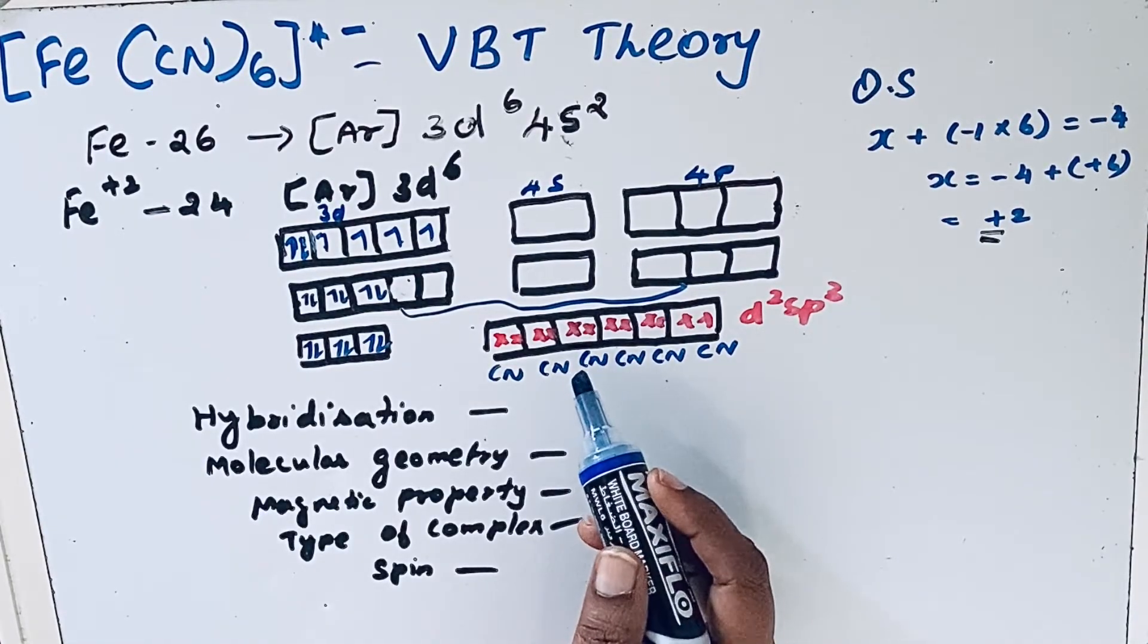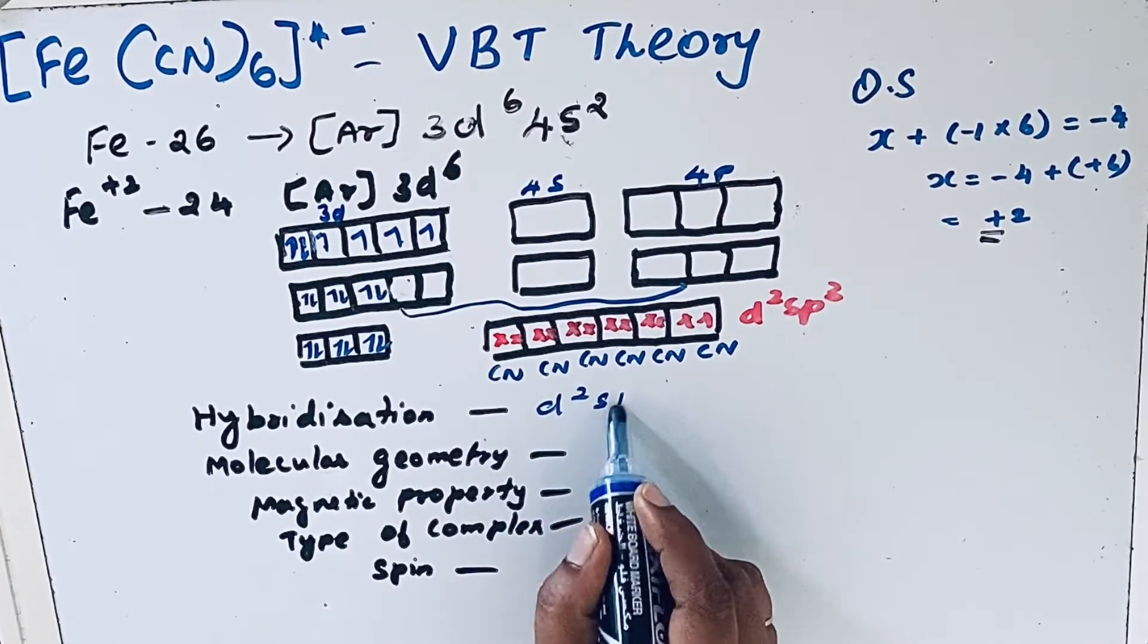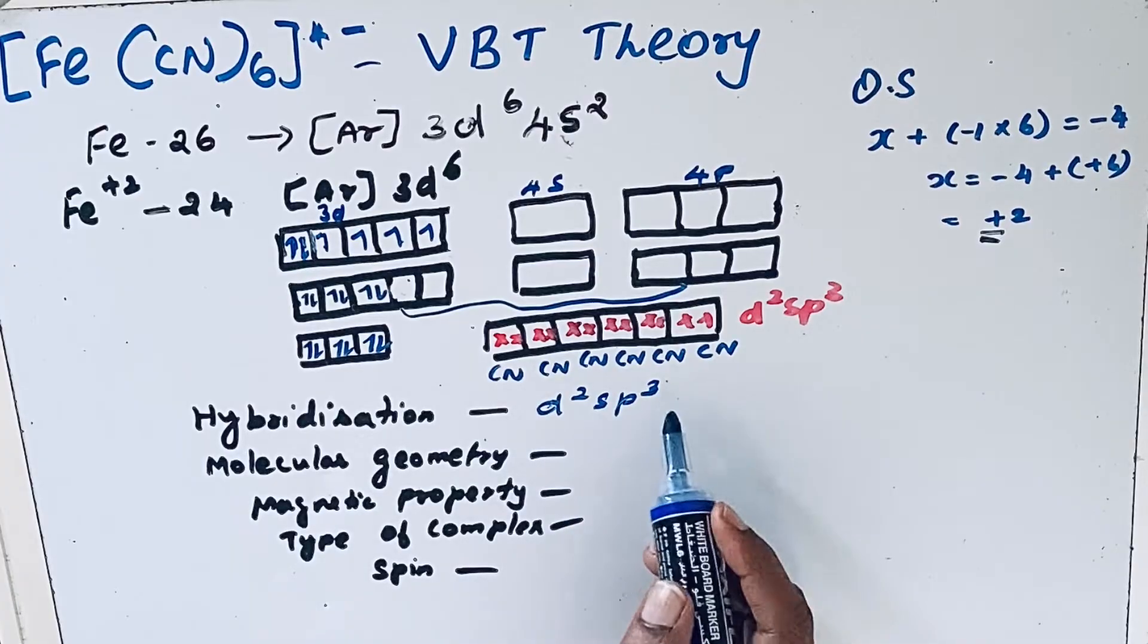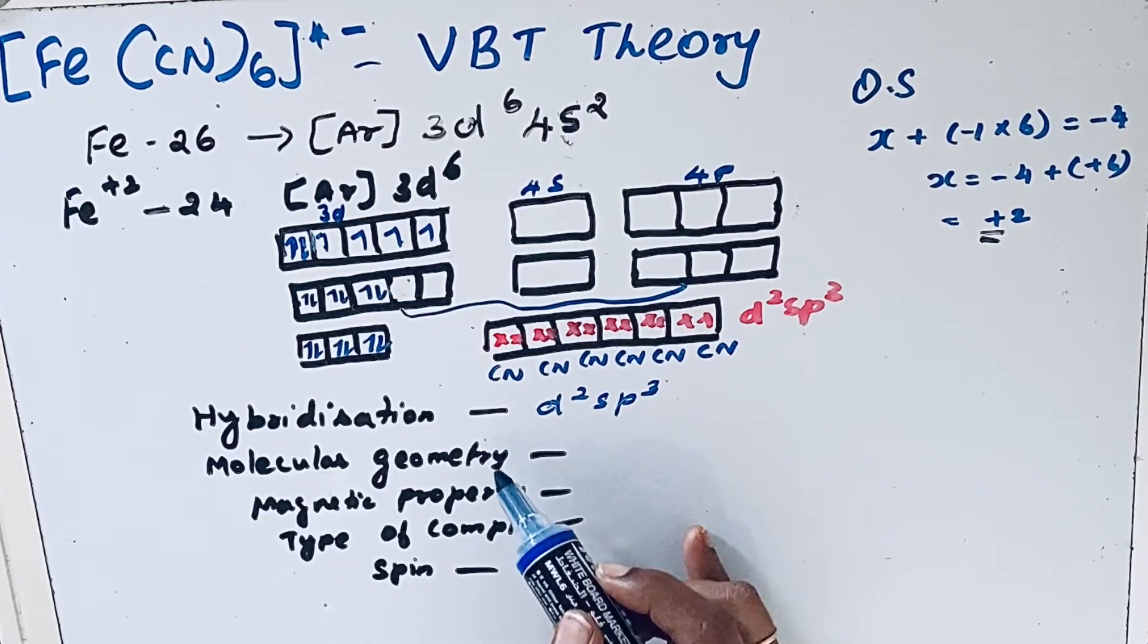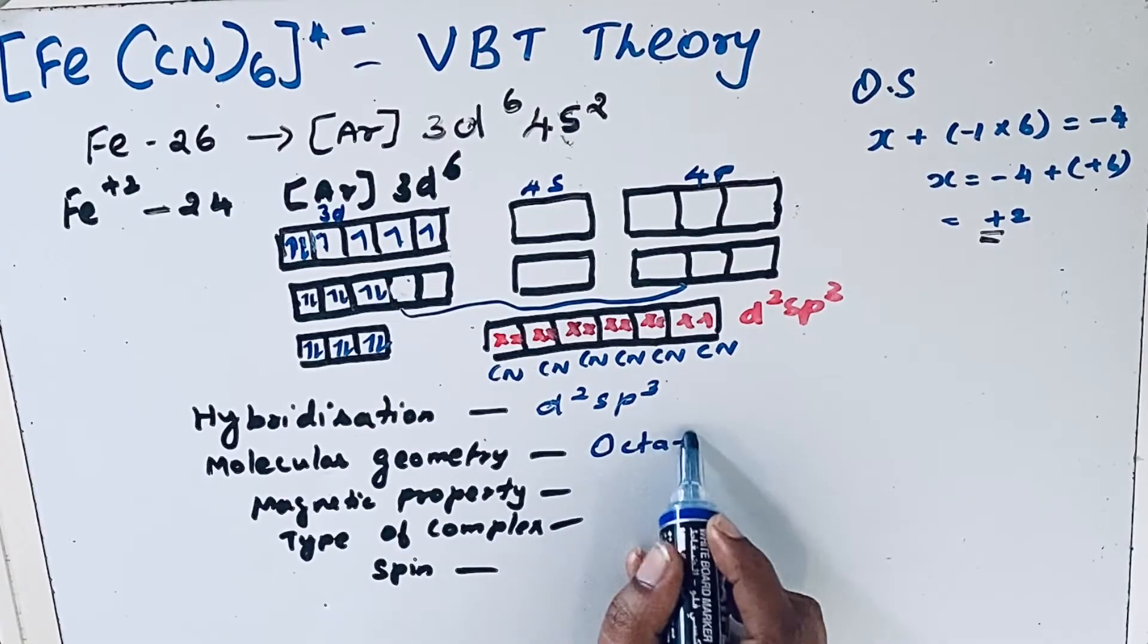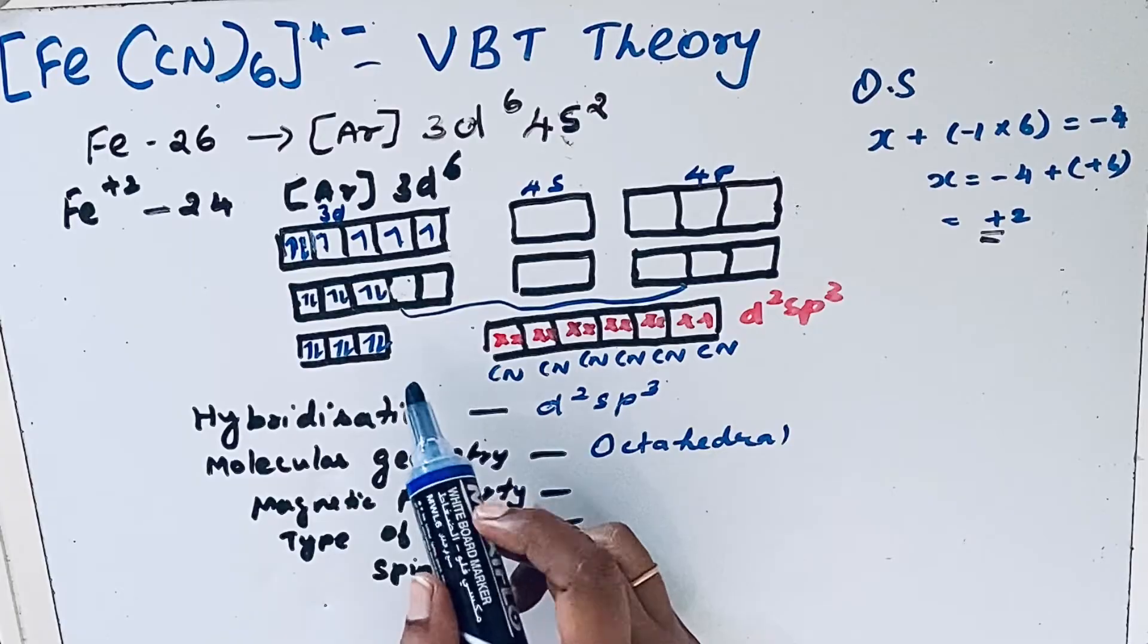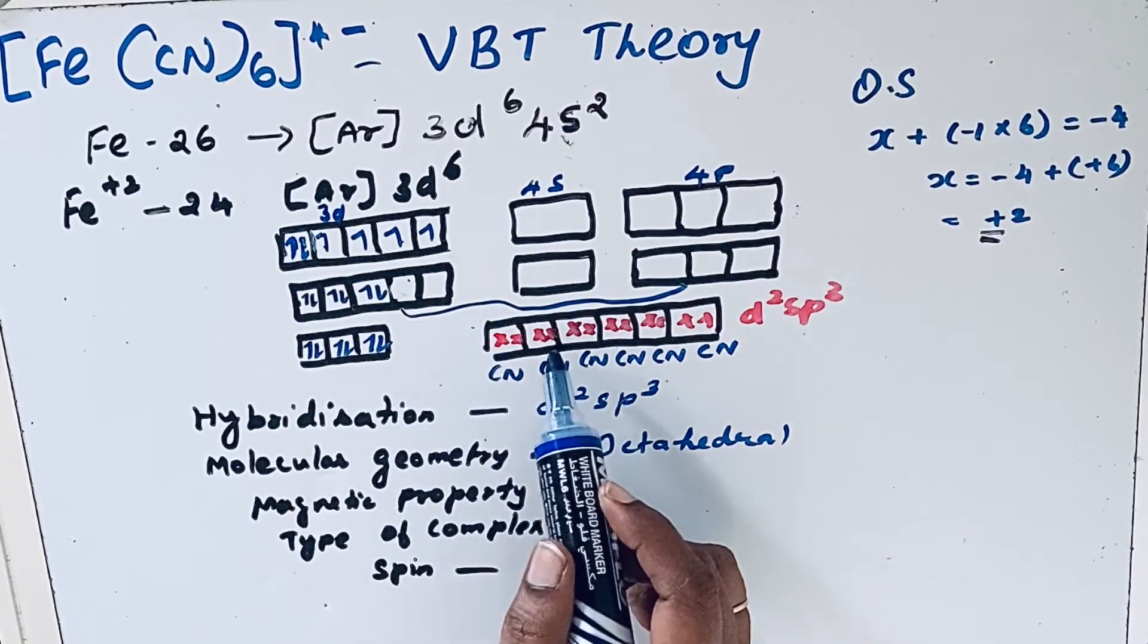Because of d2sp3 hybridization, the expected molecular geometry is octahedral. For magnetic properties, all electrons are paired, so the complex is